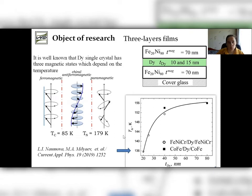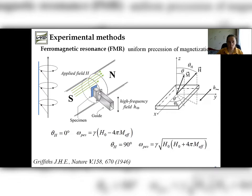The research object is three layers of exchange coupled films. We decided that the most convenient method to detect the existence and type and value of interlayer exchange interaction is the ferromagnetic resonance method. The measurement of angle dependence allows us to get the most complete data when this method is used. The orientation of the film during the experiment and dispersion relationship for two values of magnetic film angle are presented in this slide.